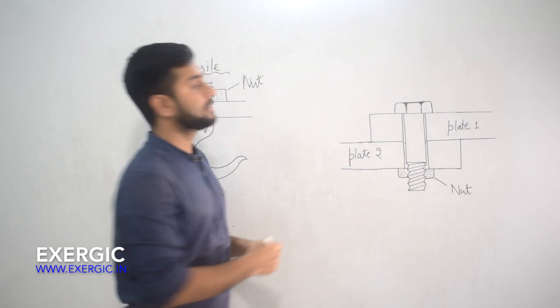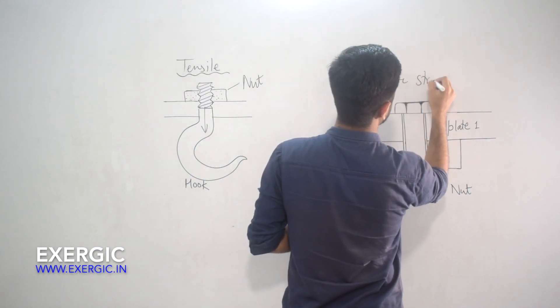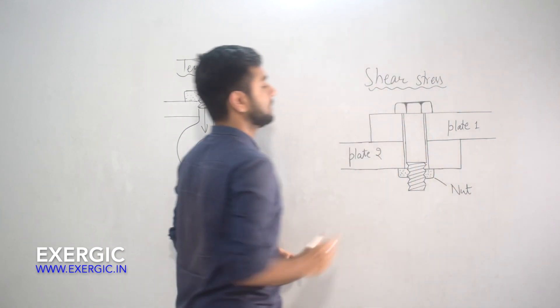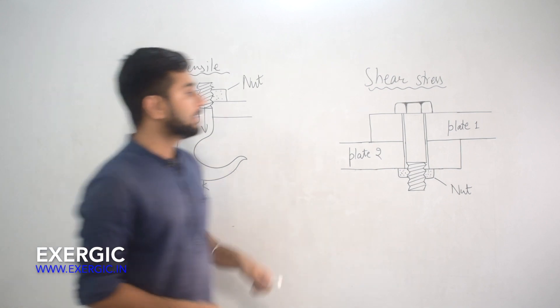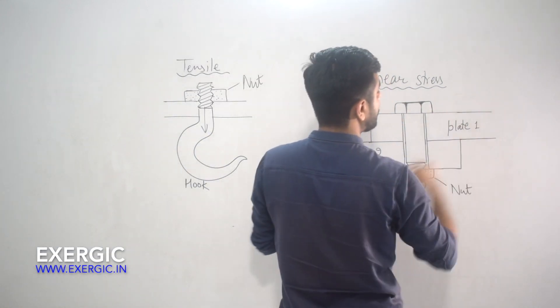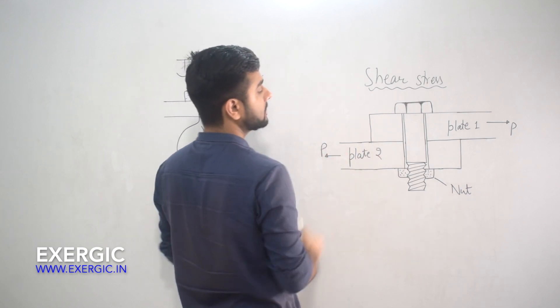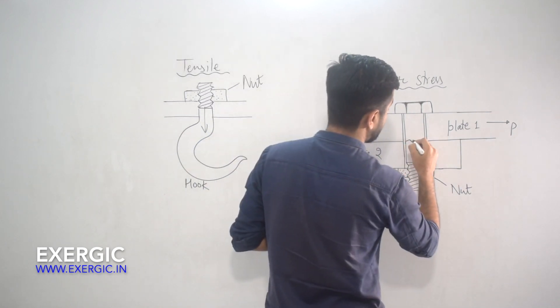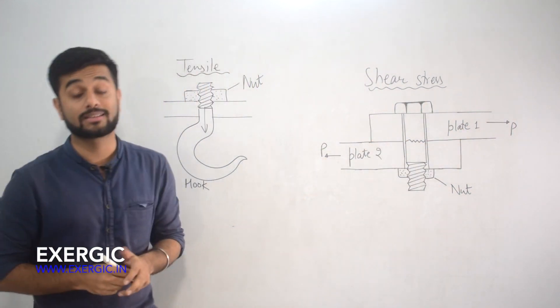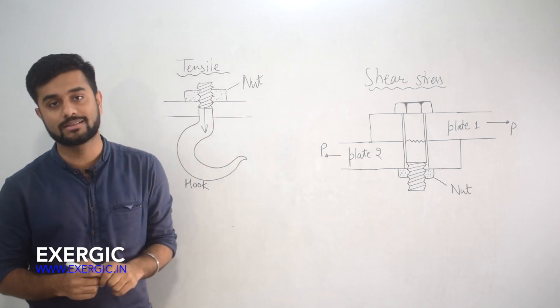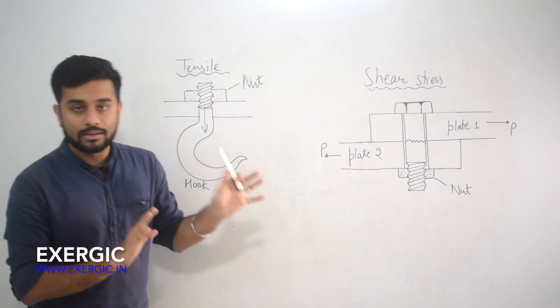The second type of loading is shear, where shear stress will be present in the cross-sectional area of the bolt. If you see that two plates are applied with such loads which are moving them like this, then this cross-sectional area here will be sheared. So shear stress will be acting on the cross-sectional area. These are the two types of stresses that are majorly acting in these bolts.